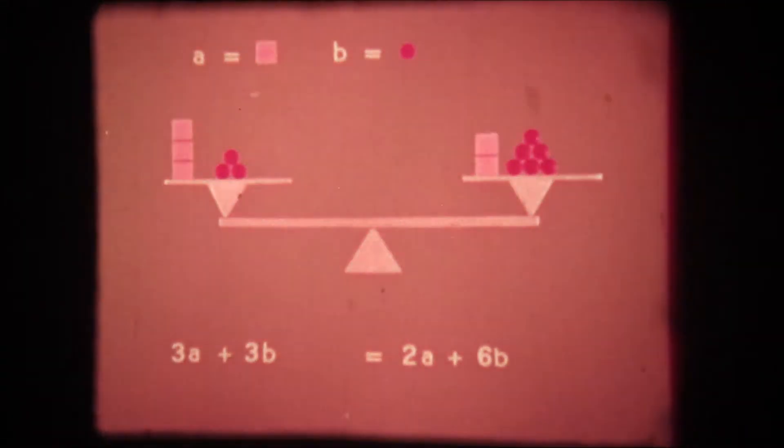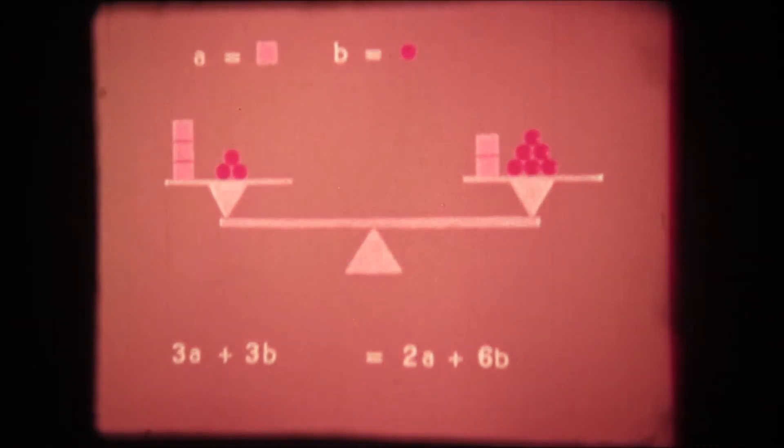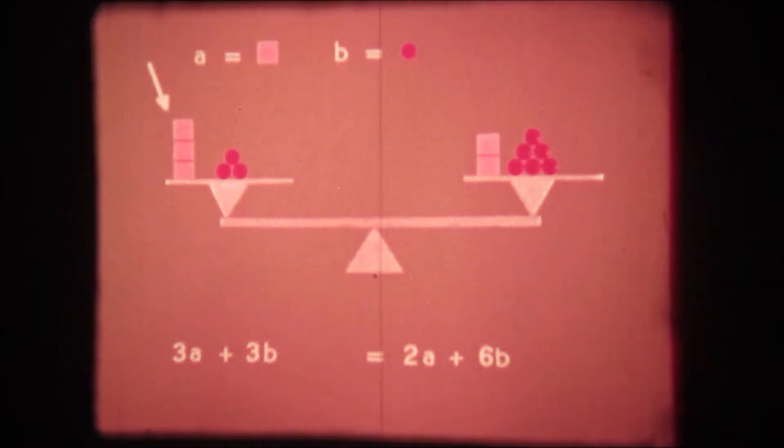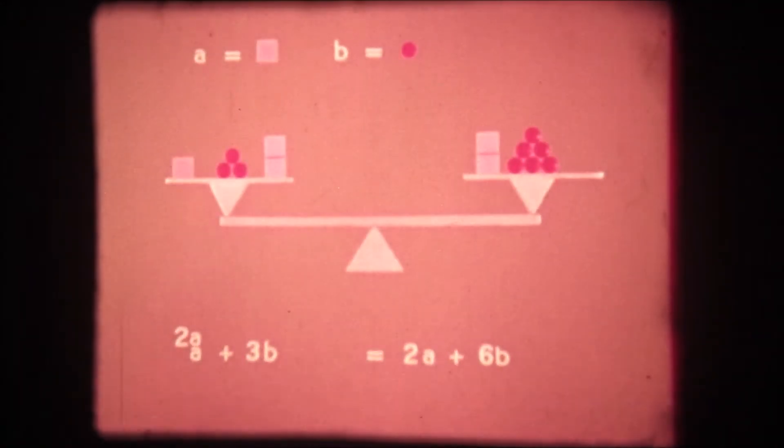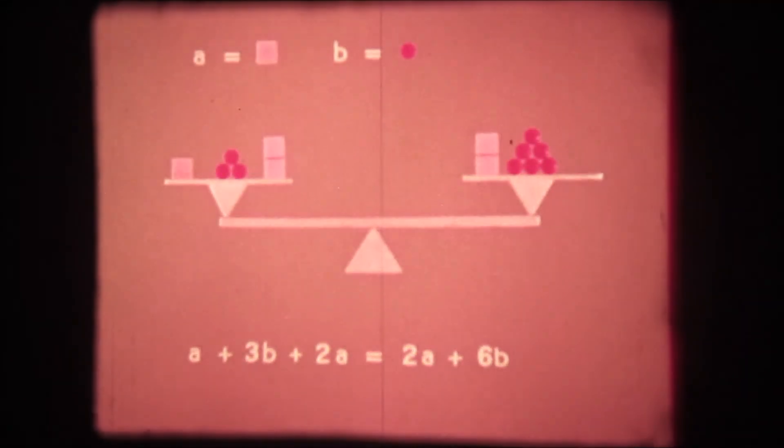The next step is to take some of the remaining terms apart. Our arithmetic tells us that three A can be taken apart to make one A plus two A. This does not affect the balance of the equation at all. Now we have a quantity two A on each side which can be subtracted.